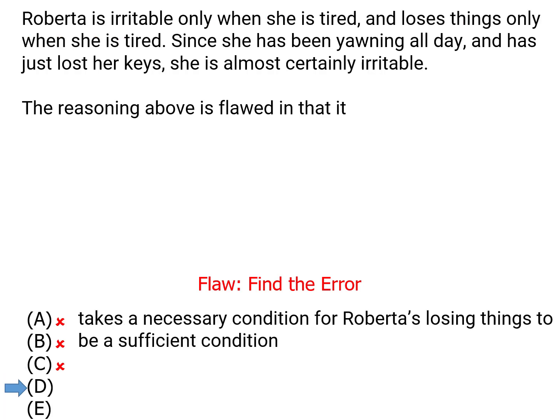Answer choice D is almost our answer. It does say that the argument is making a necessity-sufficiency flaw, but this is actually something that the argument does right. The argument doesn't confuse the necessary condition for losing things with a sufficient condition for losing things. It says she loses things only when she's tired and gets it right — she just lost something, so she must be tired.